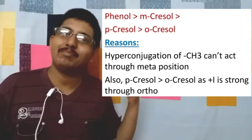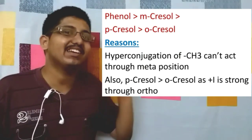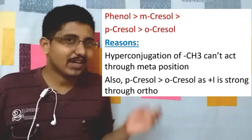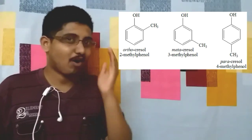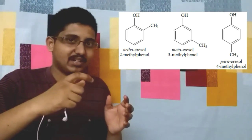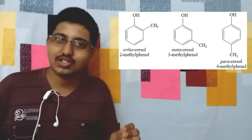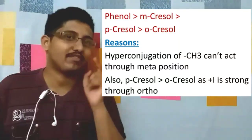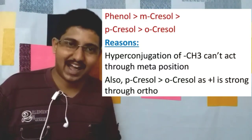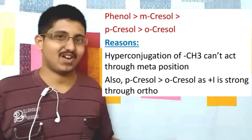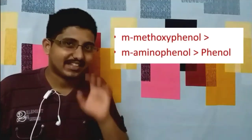Metacresol is more acidic also because the +R effect continues to operate through the meta position to a lesser extent. For ortho and paracresols: at the ortho position, the methyl group is closer to the O-H group, so the +I effect is stronger, making orthocresol a weaker acid than paracresol. Therefore the order is: phenol > metacresol > paracresol > orthocresol.